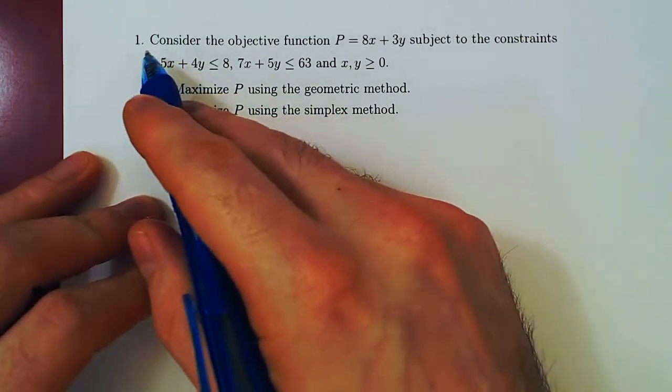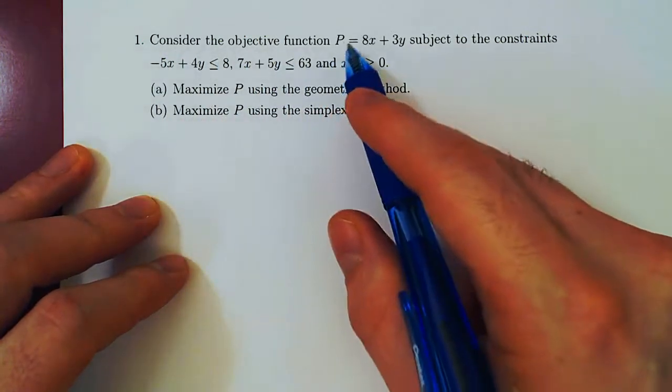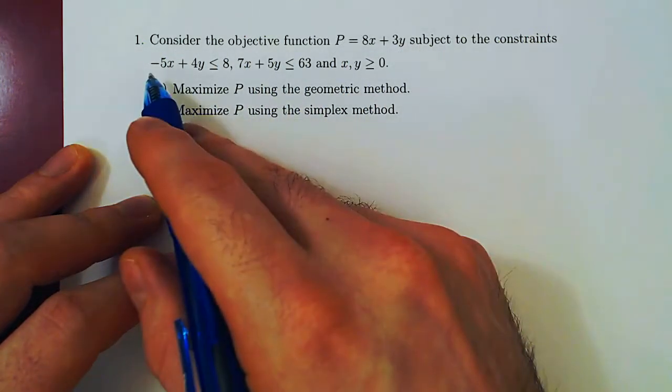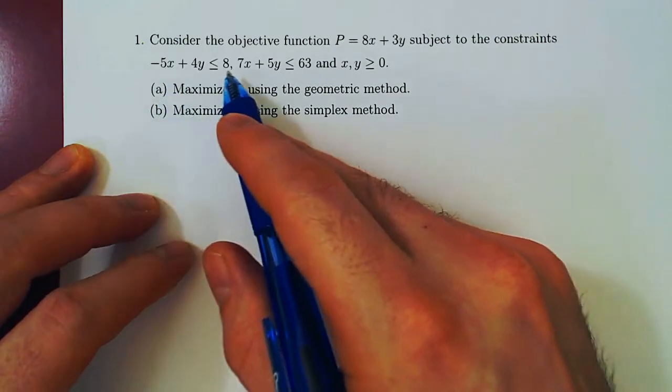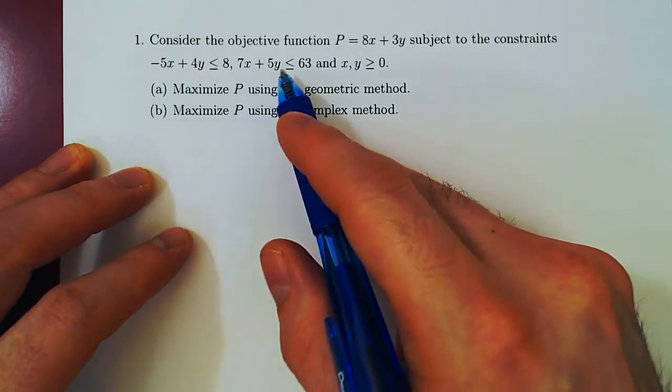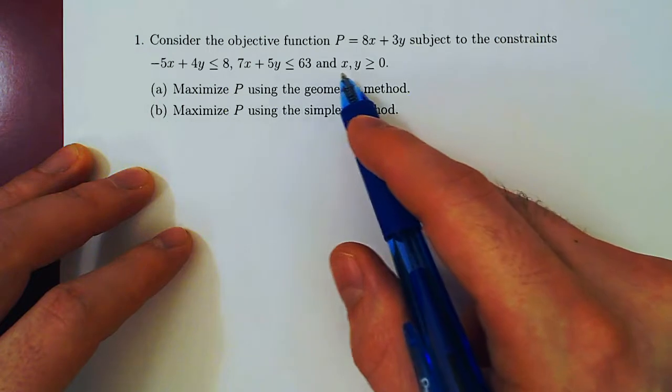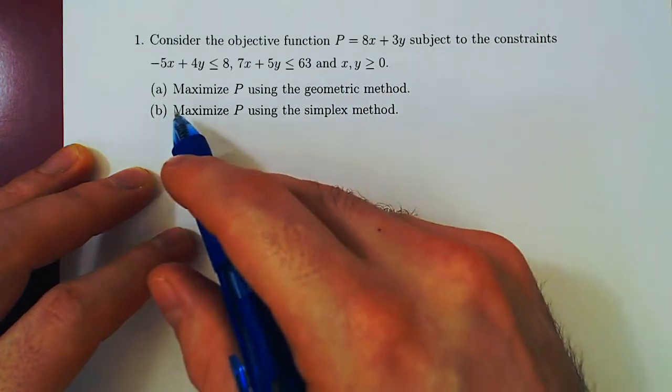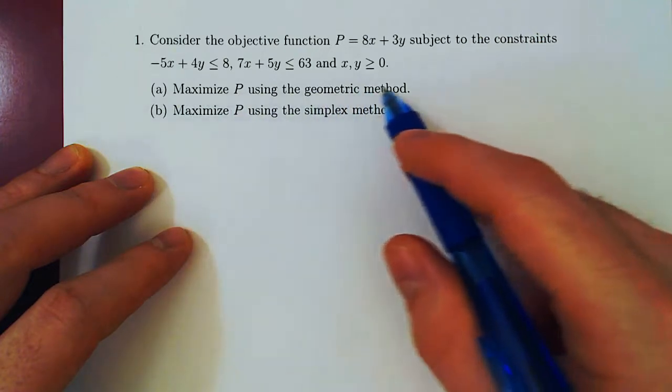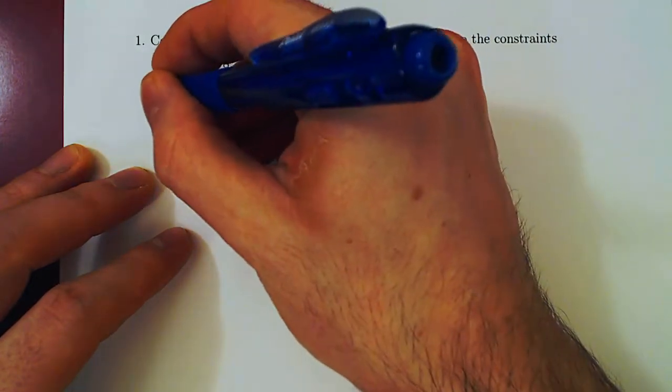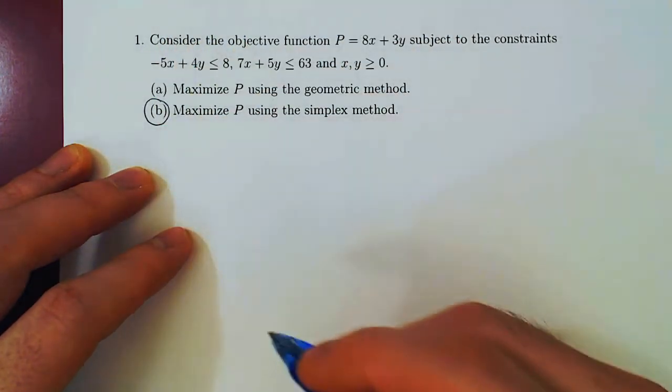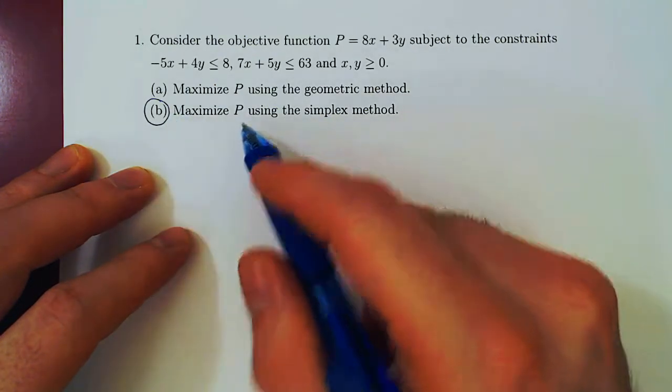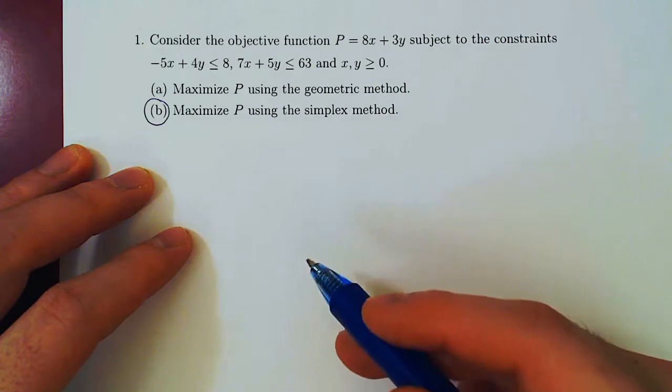Okay, so recall the problem. Consider the objective function p equals 8x plus 3y subject to the constraints negative 5x plus 4y is at most 8, 7x plus 5y is at most 63, and both x and y are non-negative. In the previous video, we found a way to maximize p using the geometric method. In this video, this will be our first example of the so-called simplex method. We will maximize p now using the simplex method.